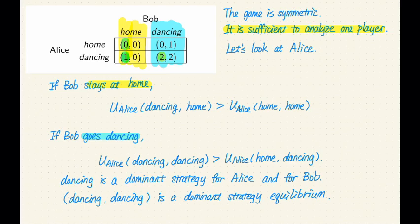Her utility is two. And what happens if Alice stays at home, her utility is zero. Two is better than zero. So again, Alice prefers going dancing to staying at home.